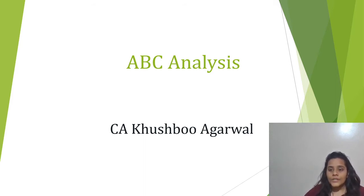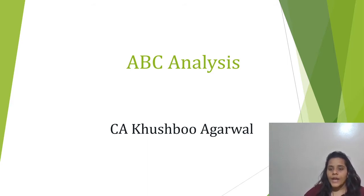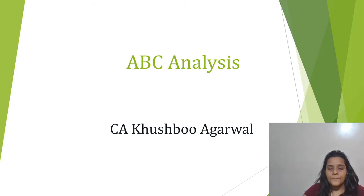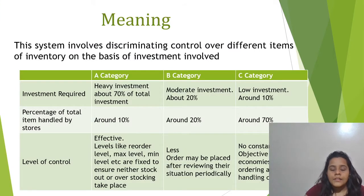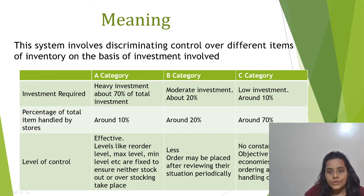So in this way, on the basis of the amount of investment involved and the quantity of the item maintained in the stock, we can categorize the items into three categories: A, B and C. This is what ABC analysis is.